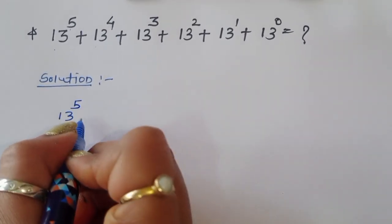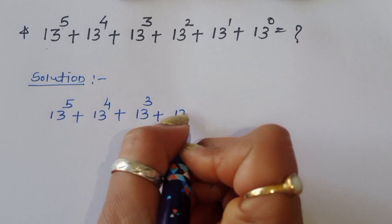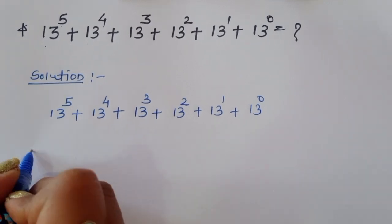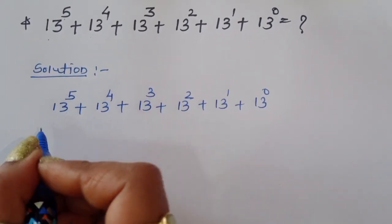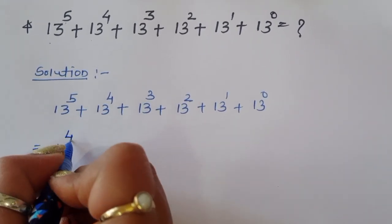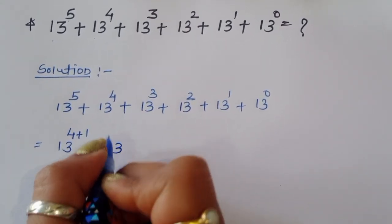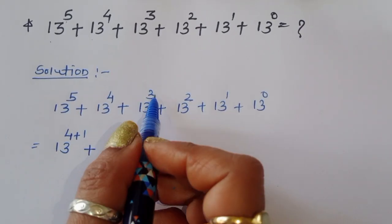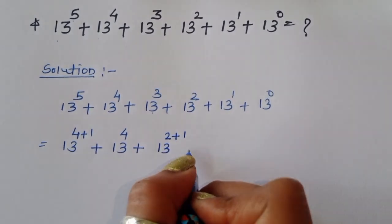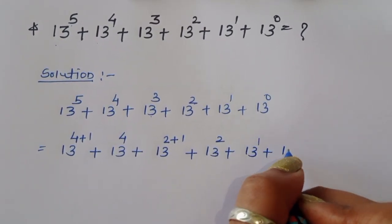The question is 13 power 5 plus 13 power 4 plus 13 power 3 plus 13 power 2 plus 13 power 1 plus 13 power 0. Now we can make some changes in the powers. 13 power 5 — we can write the power 5 as 4 plus 1. Similarly, power 3 we can write as 2 plus 1. So we get 13 power (4+1) plus 13 power 4 plus 13 power (2+1) plus 13 power 2 plus 13 power 1 plus 13 power 0.